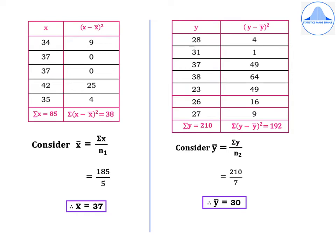Form a table with the X values: 34, 37, 37, 42, 35. Summation X = 185. X-bar = summation X / N1 = 185 / 5 = 37. Calculating (X minus X-bar)²: 34 − 37 = −3, (−3)² = 9. Similarly, the remaining (X minus X-bar)² values give summation (X minus X-bar)² = 38.